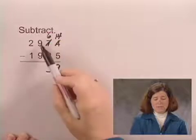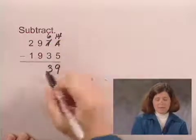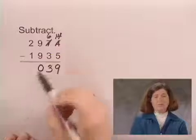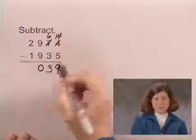In the 100s column, 9 minus 9 is 0. And in the 1,000s column, 2 minus 1 is 1.